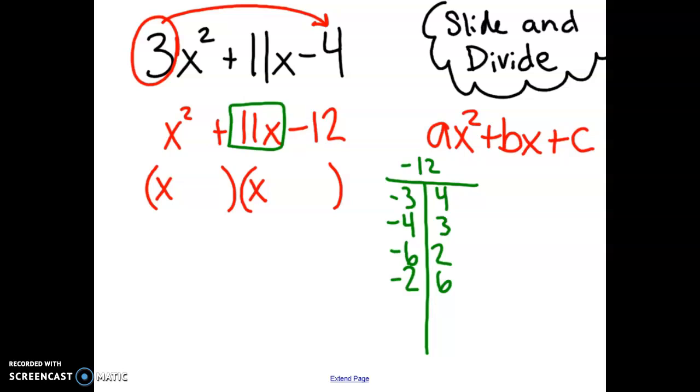So the only other things that multiply to give us 12 are negative 1 times 12, or negative 12 times 1. Now, keep in mind, we do want a positive 11x. So negative 1 and positive 12 are going to be our two numbers.